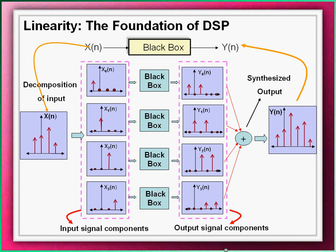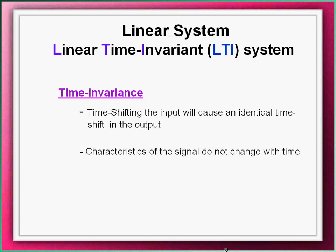Another important property of linear system is time invariance. A system is said to be time invariant if a shift in the input signal causes an identical shift in the output signal.